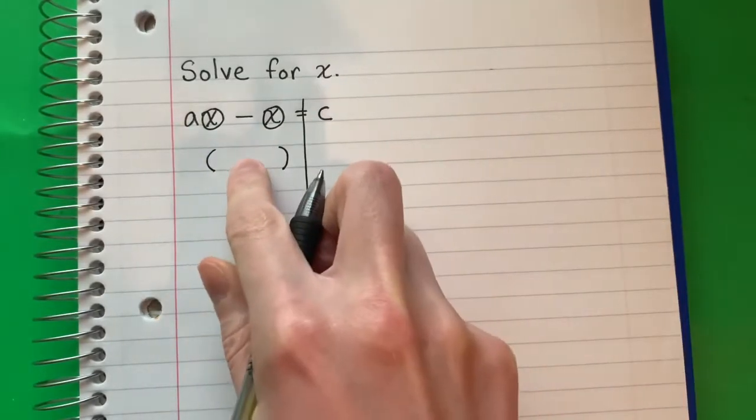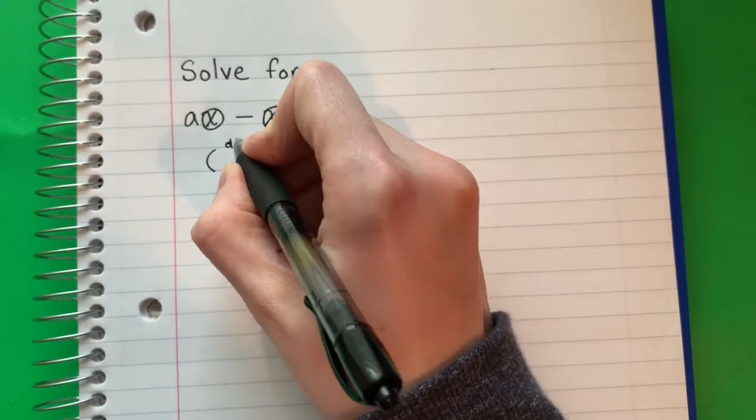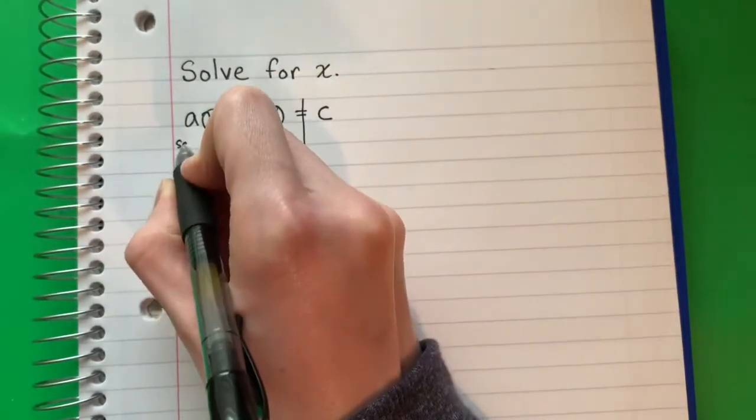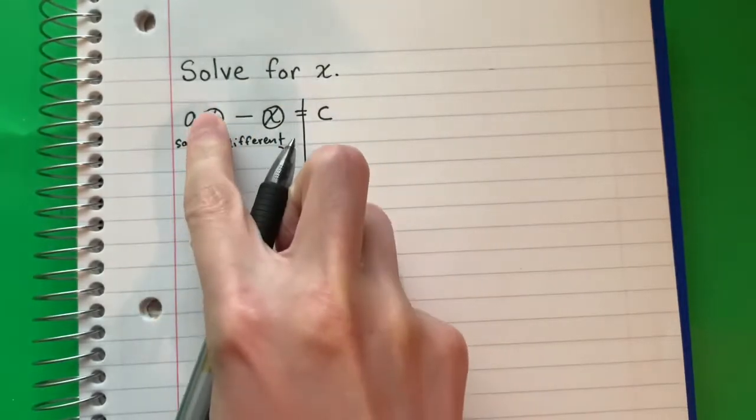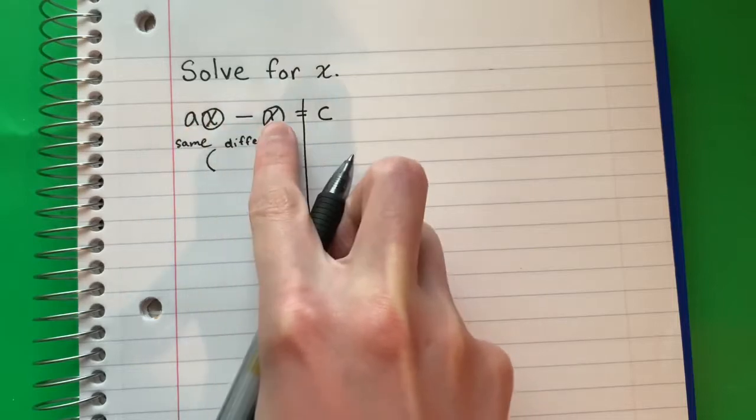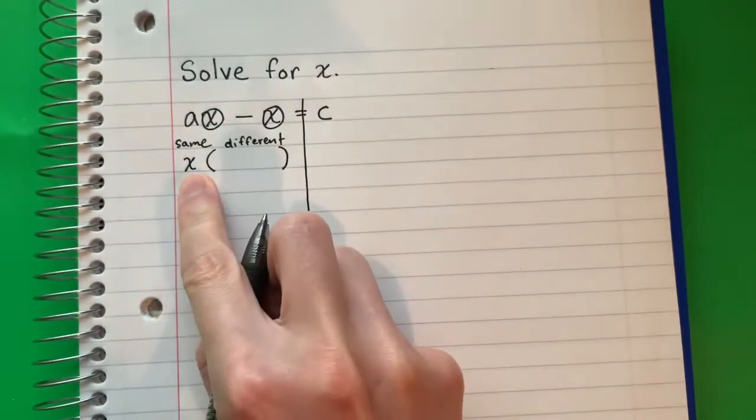On the inside goes what is different, and on the outside goes what is the same. What is the same here? X. X is the same for these two terms, so I'm going to put the X on the outside.